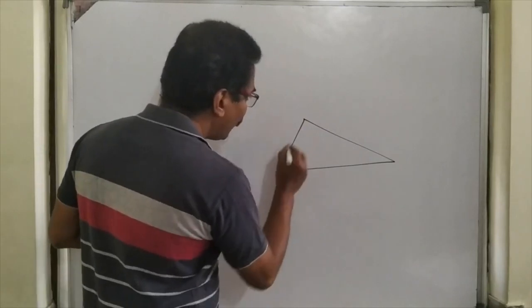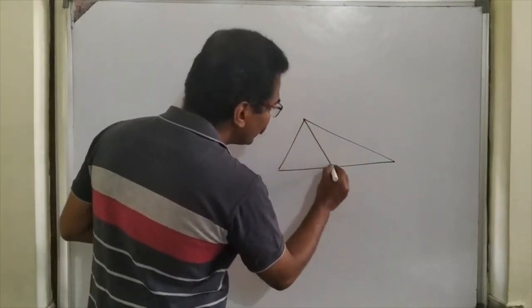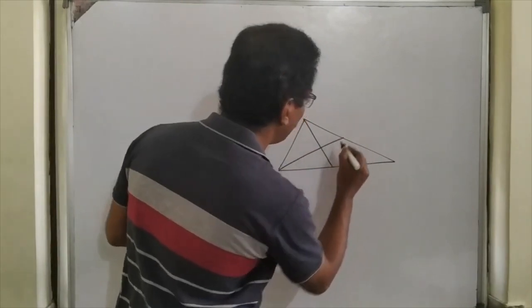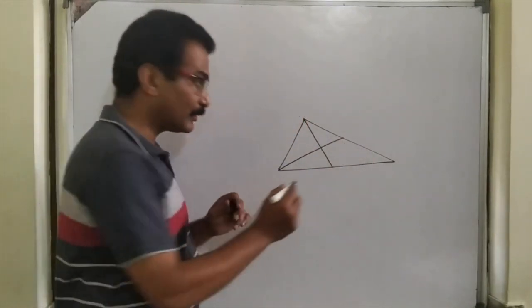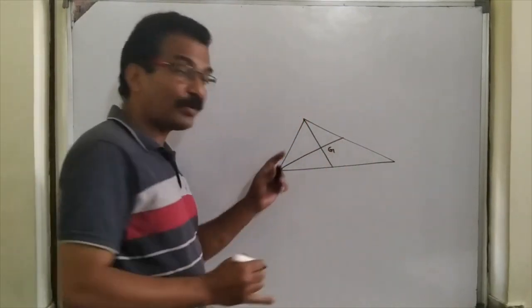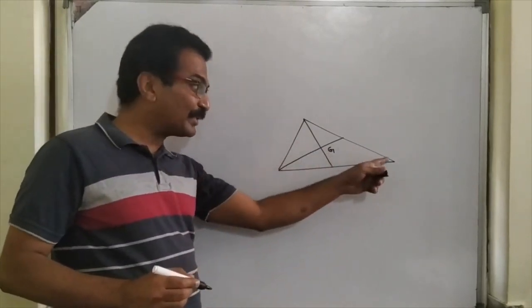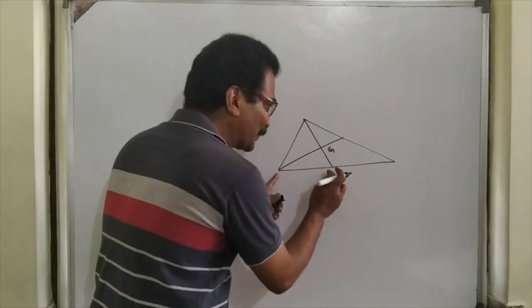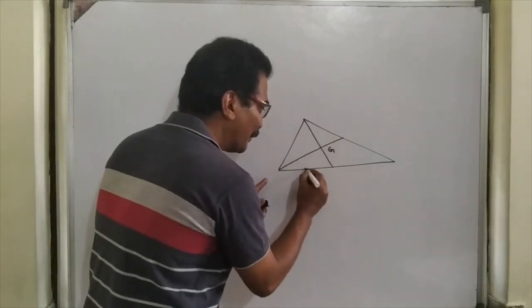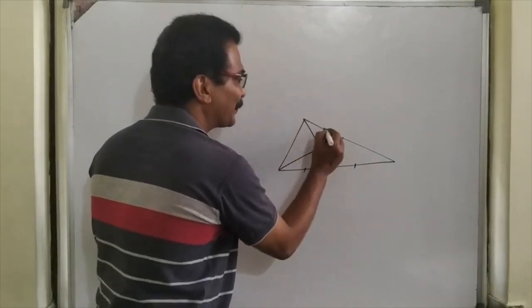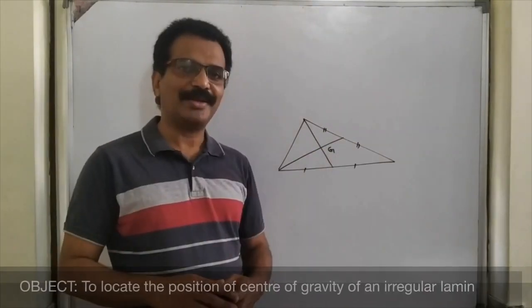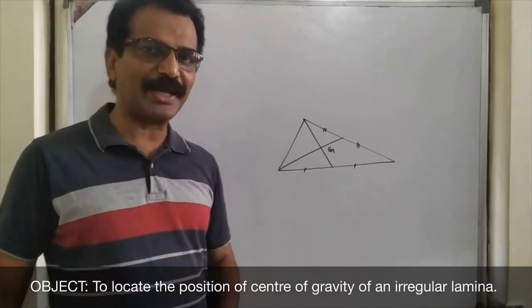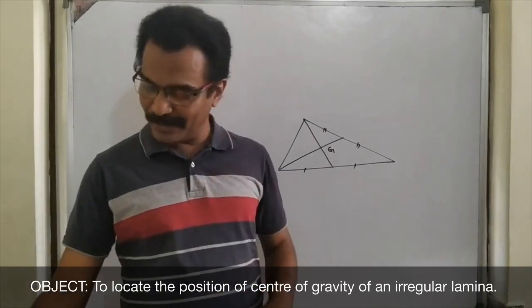For triangular lamina, in the examination, if you draw like this, you may lose marks. Not because of not showing the third line, but because not showing this as the median. Well, let us go for our work to find the position of central gravity of an irregular lamina.